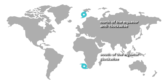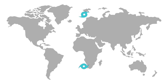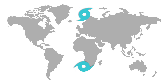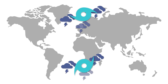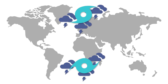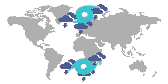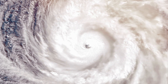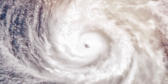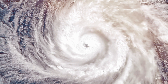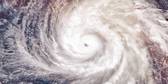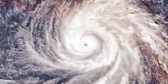If a storm has a continuous supply of energy from a warm ocean, it can suck in more and more air, becoming bigger and bigger. The rising air rotates faster and faster, the storm clouds grow bigger and bigger, and the storm becomes stronger and stronger. Once the winds reach 120 km per hour, the tropical storm officially becomes a hurricane, typhoon or cyclone.